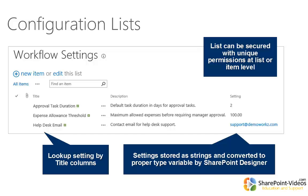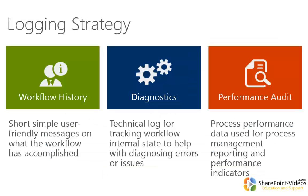Once we've figured out how we want to do configuration, we also want to figure out a logging strategy. There are three different kinds of things we typically want to think about logging from a workflow. Workflow history is simply nice, user-friendly information — we can add messages indicating what has been accomplished by our workflow so far. For example, when a particular task gets approved, we might write a workflow history message indicating who completed the approval and when.